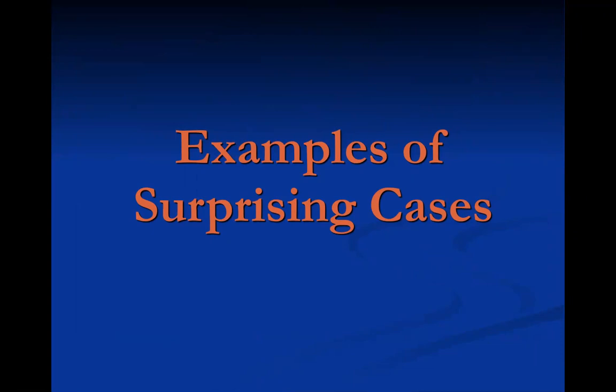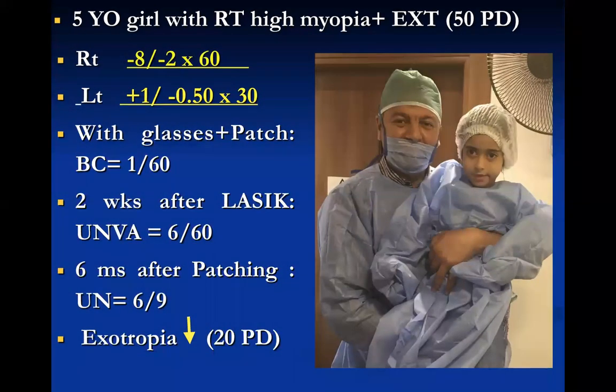Here are some surprising cases from this study. The first is a five-year-old girl with right eye myopia and exotropia of 50 prism diopters. The right eye was -8.00/-2.00, the left eye +1.00/-0.50. With glasses and strict patching compliance, best corrected visual acuity was 1/60. Surprisingly, two weeks after LASIK, her unaided visual acuity was 6/60. Even more surprising, after six months of patching, the unaided visual acuity was 6/9.